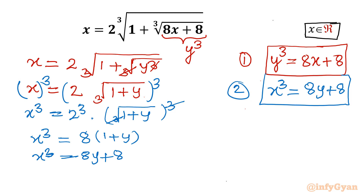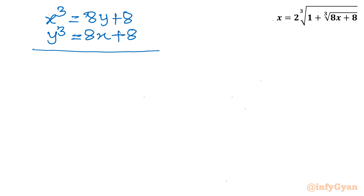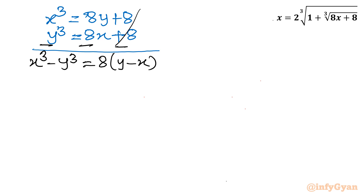Now I will solve this new symmetric system: x³ = 8y + 8 and y³ = 8x + 8. I subtract the second equation from the first. The left-hand side gives x³ − y³, and the right-hand side gives 8(y − x). Taking all terms to the left-hand side: x³ − y³ − 8(y − x) = 0.